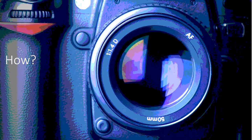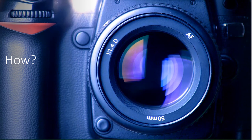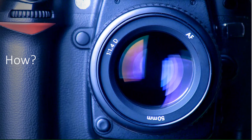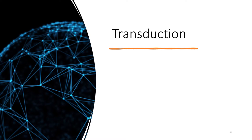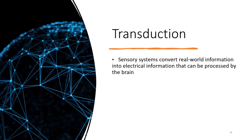So how does something go from a physical process to a psychological process? This happens through transduction. Sensory systems convert real-world information into electrical information that can be processed by the brain. When sensory information is detected by a sensory receptor, sensation has occurred. For example, light entering the eye causes chemical changes in cells lining the back of the eye, which relay messages as action potentials to the central nervous system. This conversion from sensory stimulus energy to action potential is what is known as transduction.